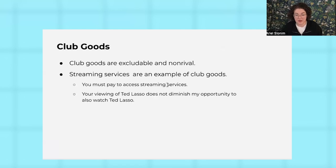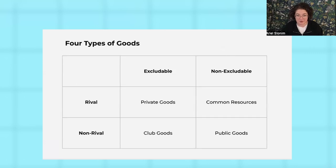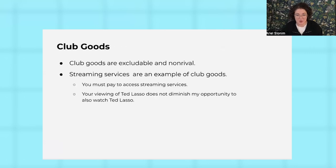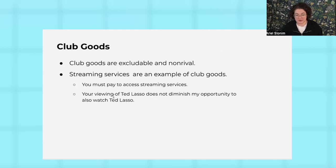Club goods are both excludable and non-rival. So if you want to privately fund a public good, you're going to have to figure out how to make it a club good — you pay while streaming, for instance. Streaming services are non-rival in the sense that I can watch Ted Lasso and you can watch Ted Lasso at the same time, but they're excludable. You can only watch Apple TV if you pay for it.